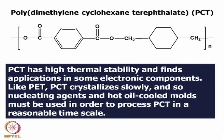Another example of such polyesters is poly(dimethylene cyclohexene terephthalate), PCT. The dimethylene part has two methyl groups linked to a cyclohexene ring — this is the alcohol part — and terephthalate is the acid part with an aromatic linkage. PCT has high thermal stability and finds applications in some electronic components.